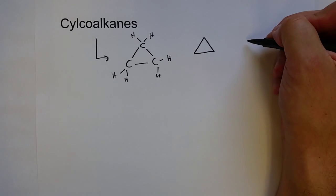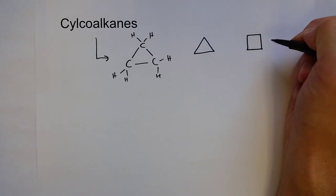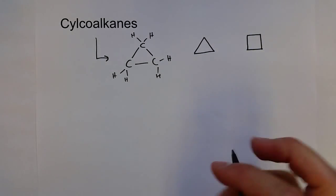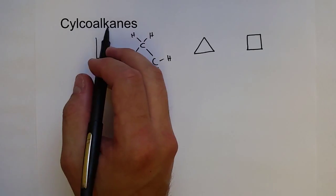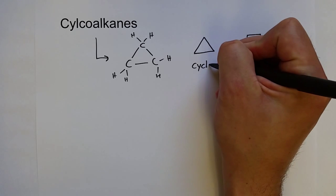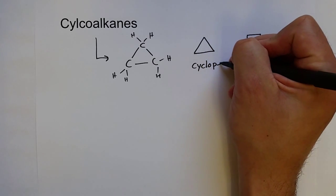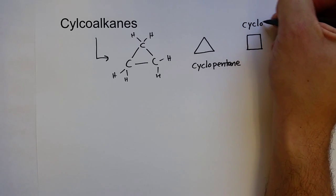And of course, we can go to four, which will be four carbons connected to each other. And we name these by just using the cyclo prefix for whatever alkane they are. So these are cyclopentane, and then of course, cyclobutane.